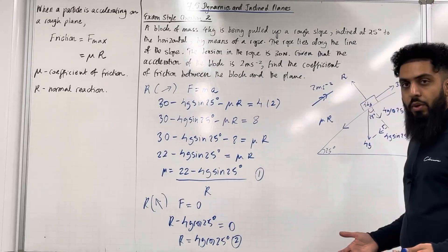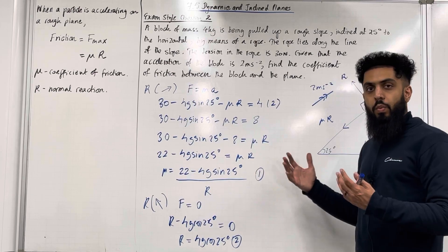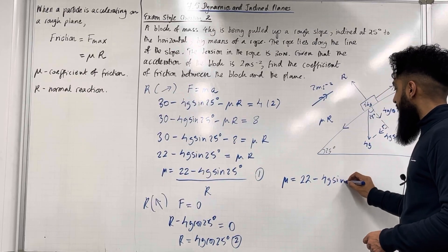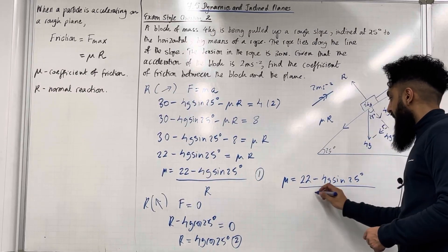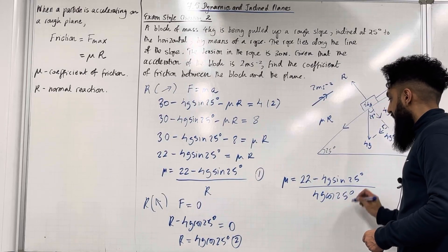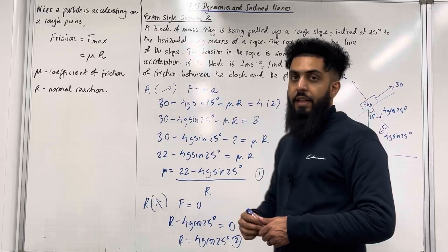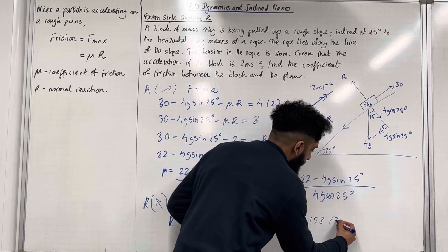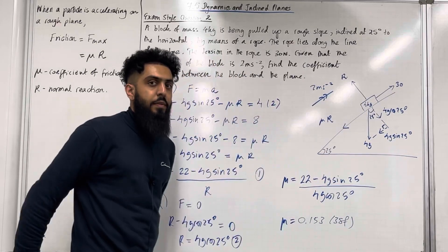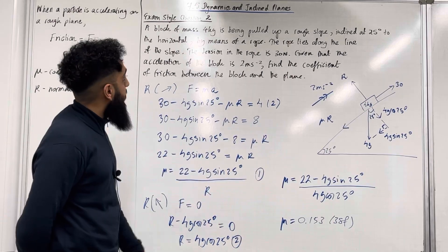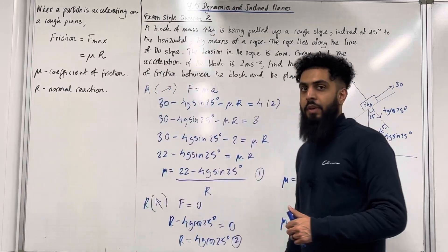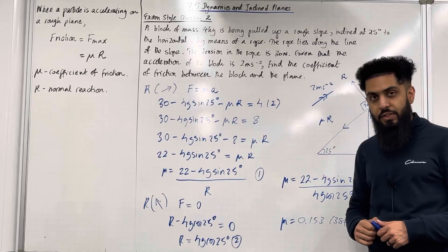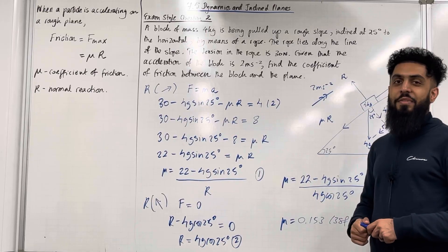To work out mu we substitute equation 2 into equation 1. Hence mu equals 22 minus 4g sin 25 degrees all over 4g cos 25 degrees. Putting this into my calculator and rounding to 3 significant figures gives mu equal to 0.153. That completes exam style question 2 and also completes this teaching video. If you found this video useful, please leave a comment, leave a like, turn on the notification bell, and please don't forget to subscribe.